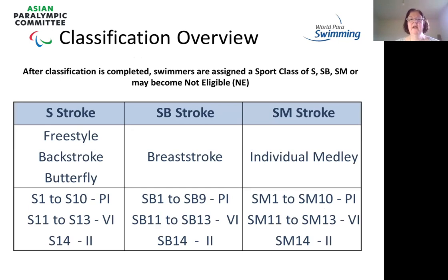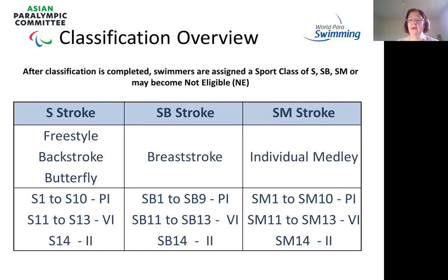Classification is completed by a panel of classifiers — a medical classifier and a technical classifier. At the end of classification, swimmers are assigned either a sports class: S for freestyle, backstroke, and butterfly strokes; SB covering breaststroke only; and SM for the individual medley, which is made up of all four strokes or three strokes for our lower class athletes. Occasionally athletes are assessed as not eligible. Within those, we have S1 to S10 for PI, S11 to S13 for the VIs, and S14 for the II.